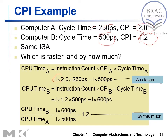For computer B, since we are working on the same number of instructions, instruction count is also I. CPU time for B equals I × 1.2 × 500 picoseconds, which gives I × 600 picoseconds. Computing CPU time of B over CPU time of A gives 1.2, so computer A is 1.2 times faster than computer B.